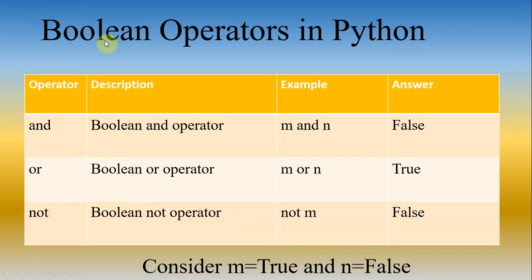We know that the bool data type takes only two values: true or false. We have considered an example where m is equal to true and n is equal to false, and we will study the truth table according to these two values.